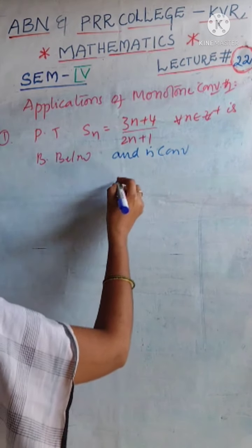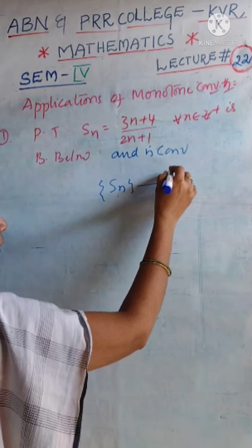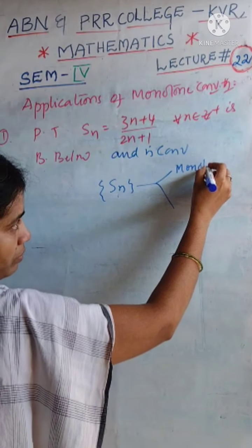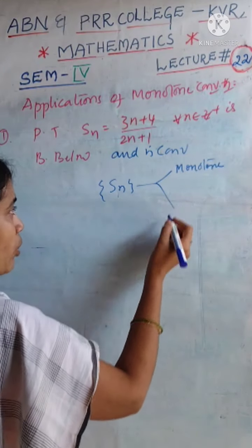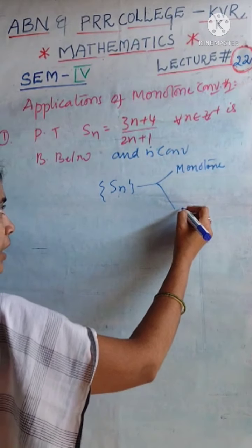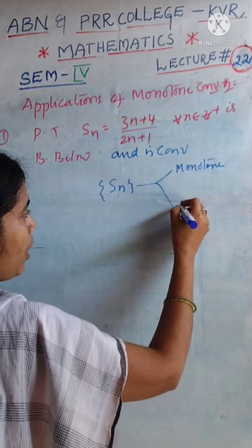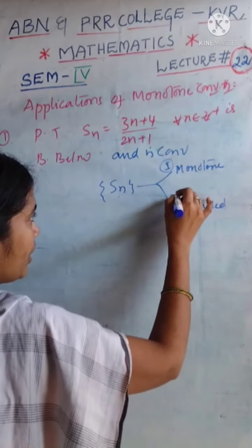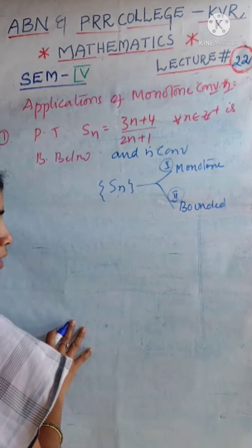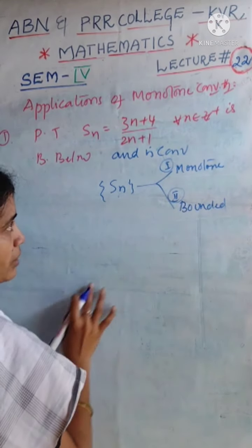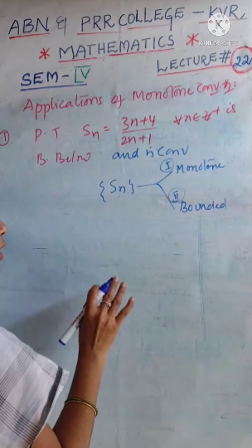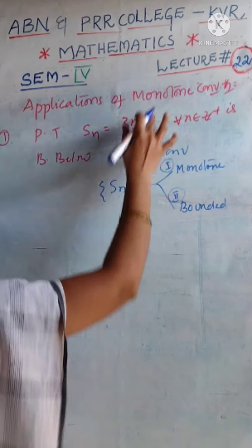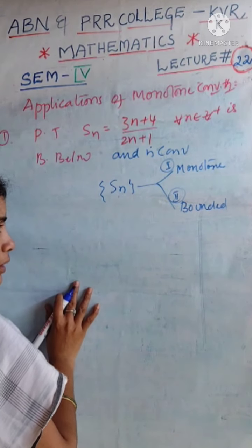That means we want to prove that the given sequence is monotone or not. First, check whether it is monotone or not. If it is monotone, then find whether it is bounded or not. These are the two cases we have to observe. If the given sequence is monotone, then observe the boundedness of that sequence. If you conclude the sequence is bounded, then we can easily say it is a convergent sequence by using the Monotone Convergent Theorem.